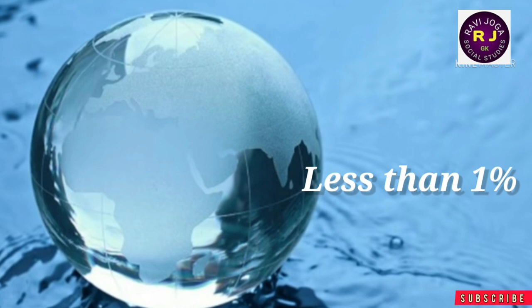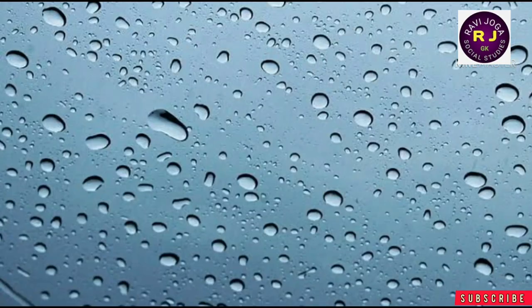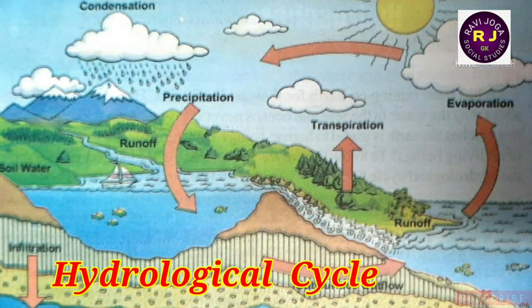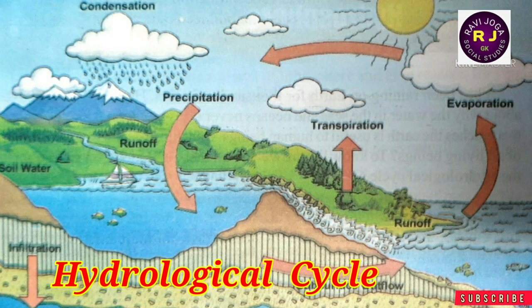Is it enough for human beings? Let's know about the hydrological cycle. Water goes through a cycle from ocean to land and land to oceans. It has been raining for billions of years, and all living things depend upon it. This hydrological cycle is the circulation of water in different forms.